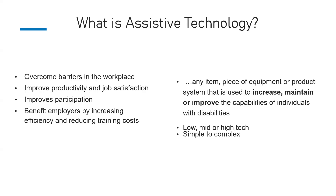Assistive technology will help any individual overcome barriers in employment or activities of daily living. It will improve productivity — and if I'm more productive, I'm more satisfied in the work I'm doing. It will improve my participation, and employers benefit from better production and less expenditure in ongoing training.